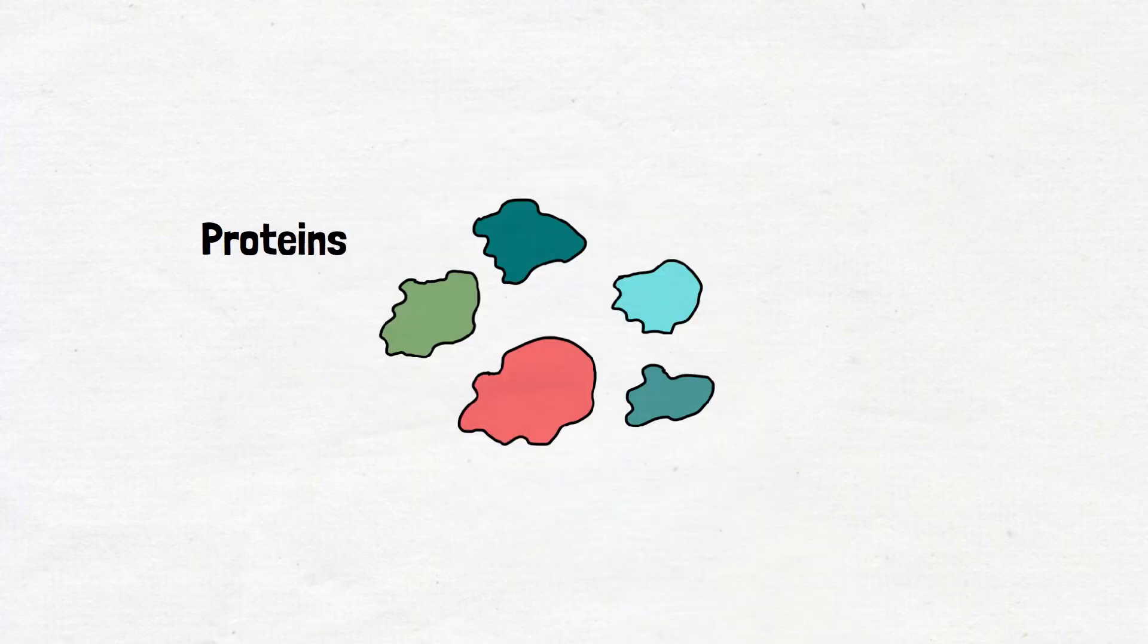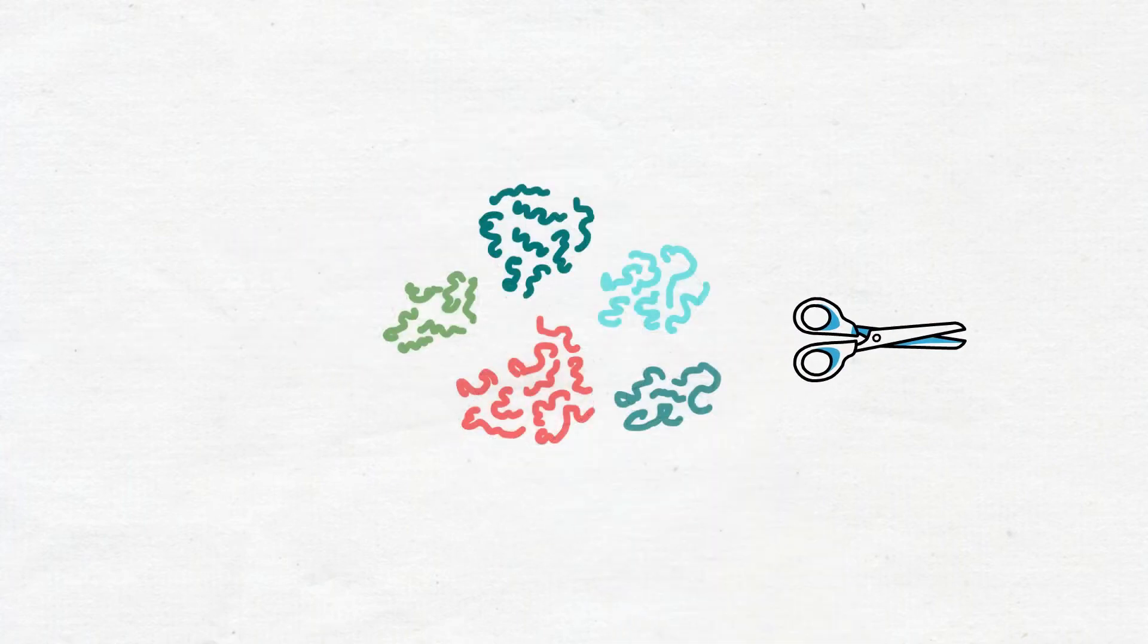The remaining proteins are digested or broken down into smaller pieces called peptides that can be measured by a mass spectrometer.